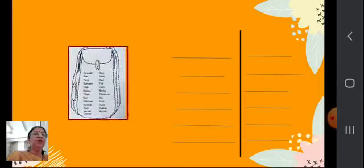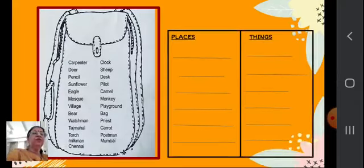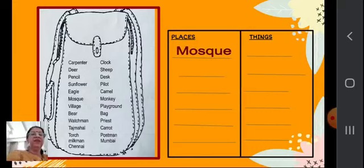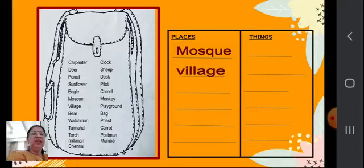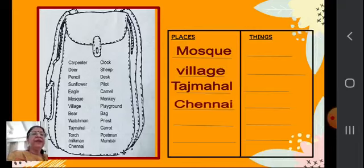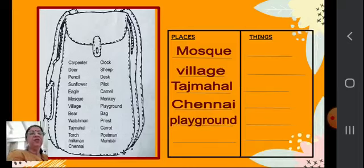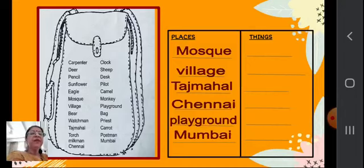Now there are two more columns. We will choose the places and write: mosque (M-O-S-Q-U-E), village (V-I-L-L-A-G-E), Taj Mahal (T-A-J M-A-H-A-L), Chennai (C-H-E-N-N-A-I), playground (P-L-A-Y-G-R-O-U-N-D), and Mumbai (M-U-M-B-A-I) — we all stay in Mumbai.